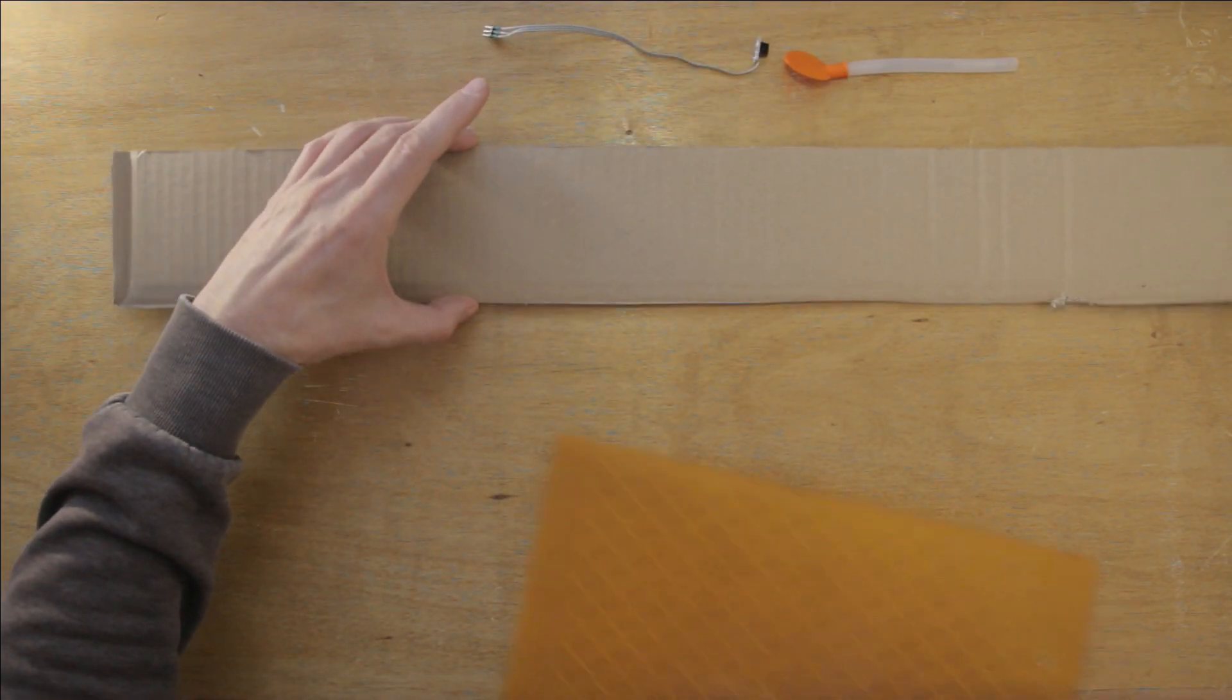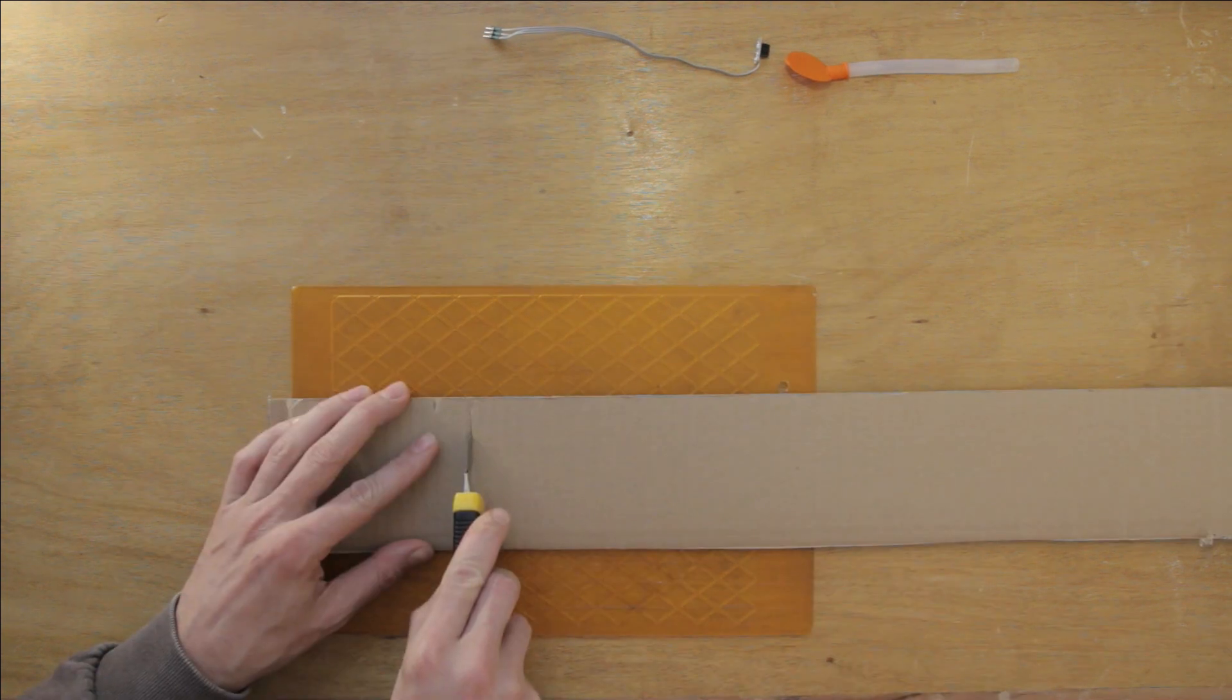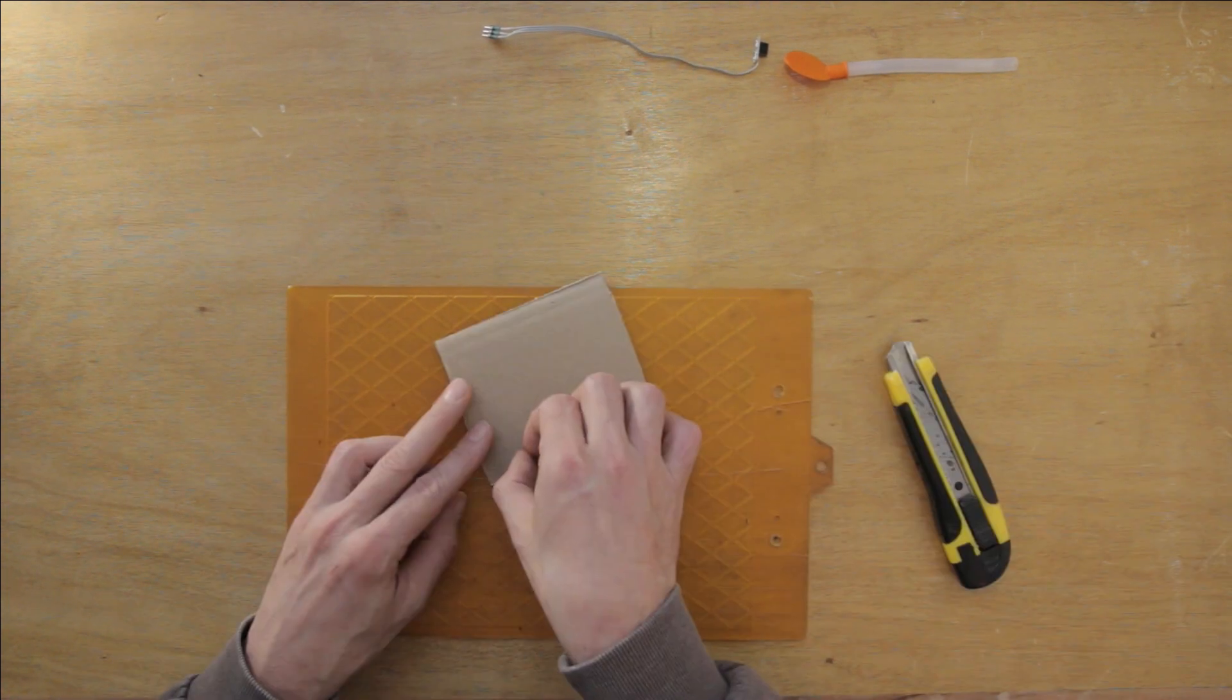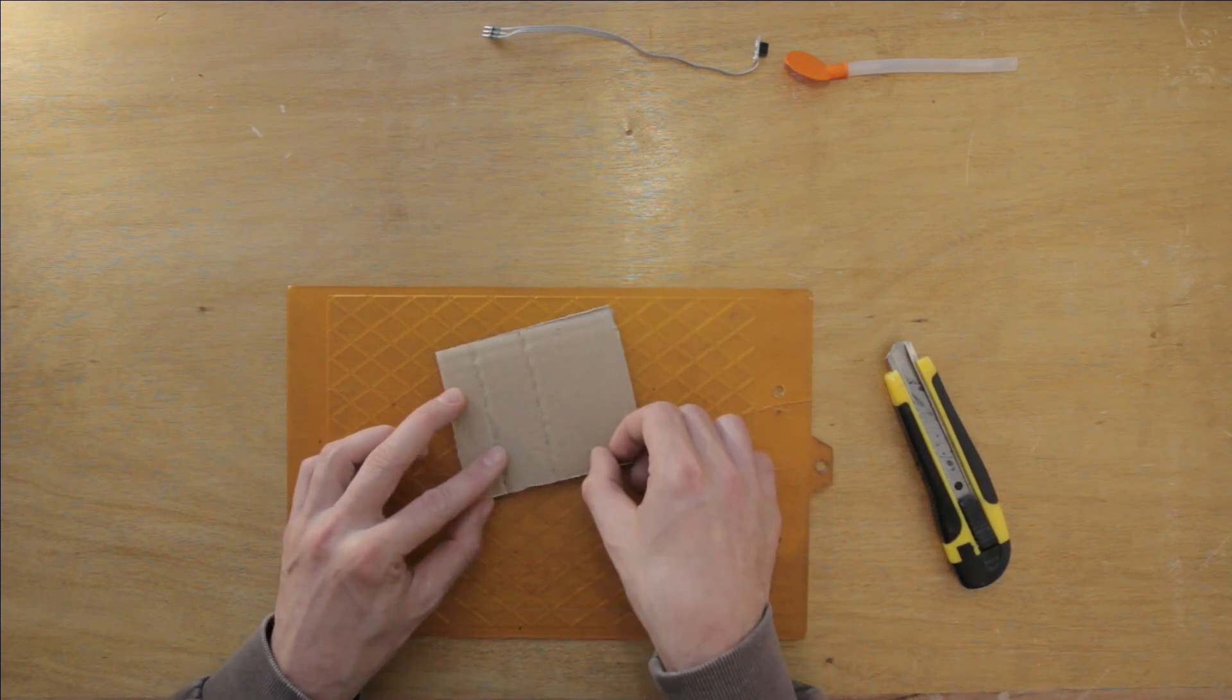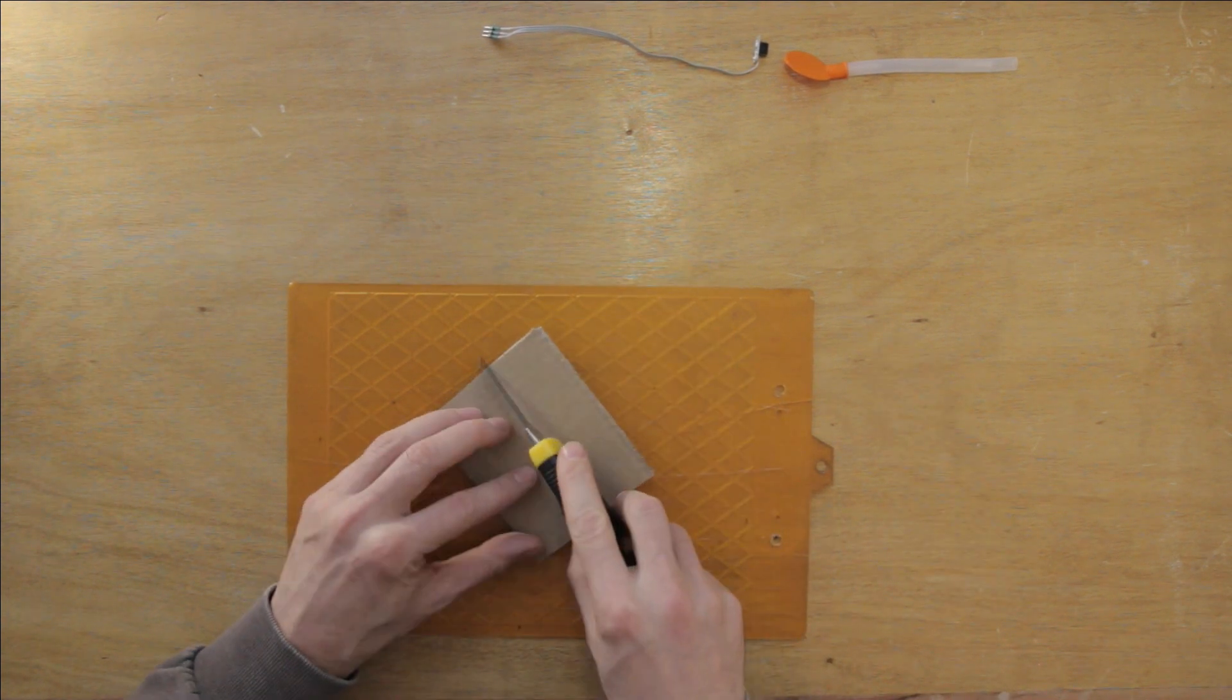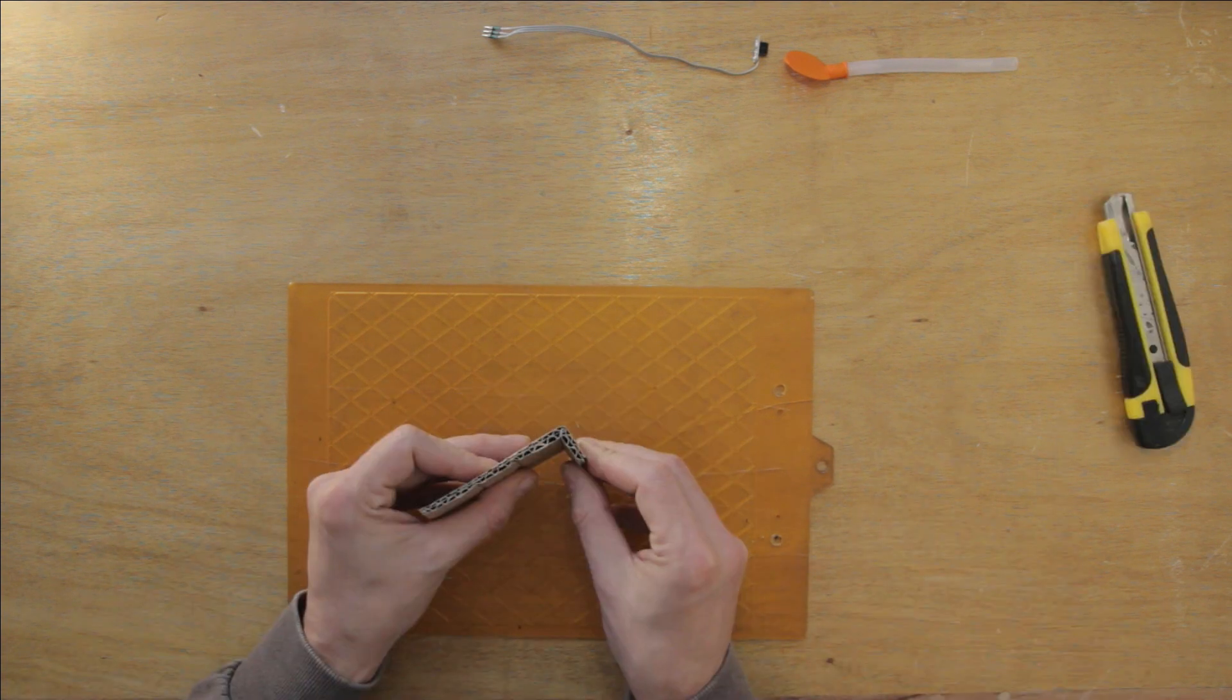Now I just need to make a simple structure to hold everything into place. Corrugated cardboard is easy to fold in predictable patterns by crushing one layer along the corrugation where you want the fold to be. This kind of construction is surprisingly strong. I make a rectangular shape like this.